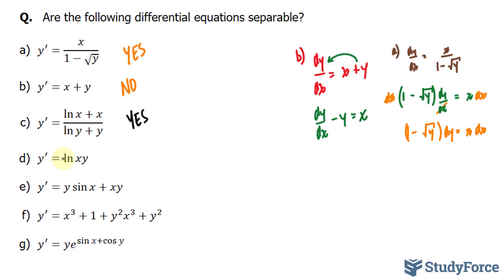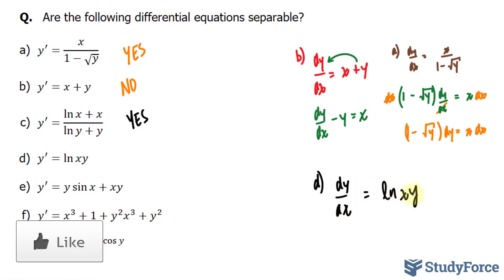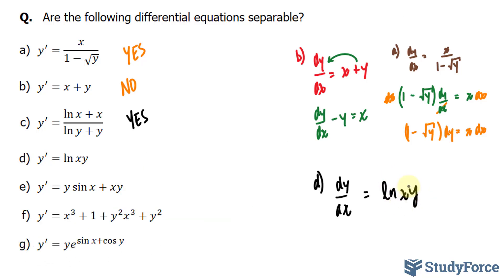What about question (d)? We have dy over dx is equal to ln(xy). Using the rules of logarithms, I can split this product x and y as ln x plus ln y. But we'll run into the same situation as question (b) — if I move that term over, I can never really isolate or separate the x and y terms. So this one is not separable.